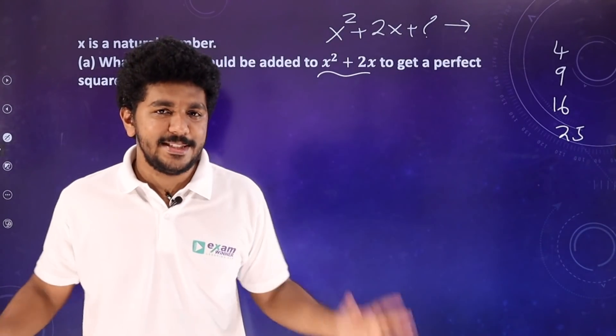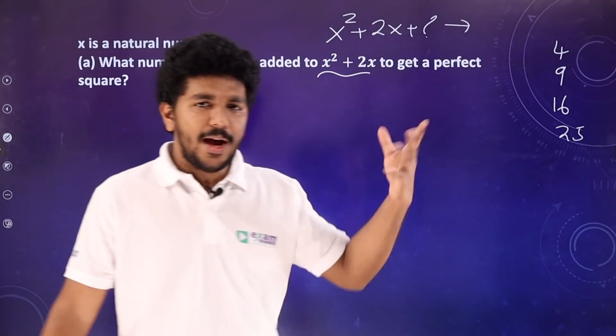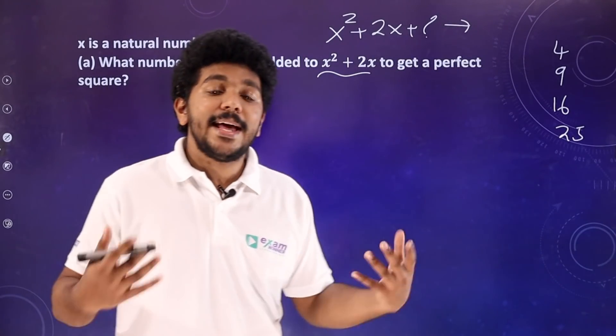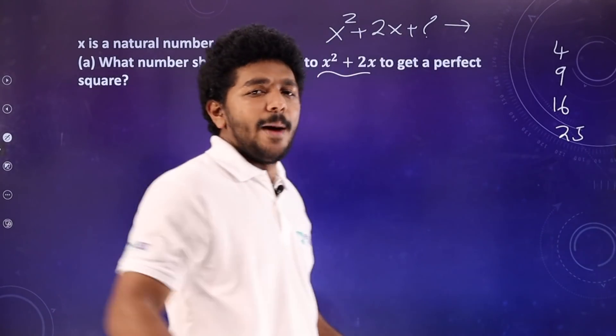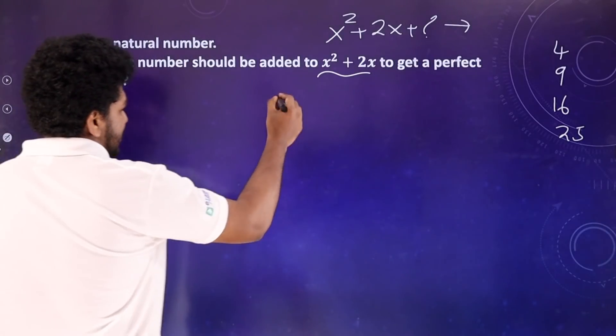I am going to do a complete the square method. Basically, in the complete the square method — or completion of the square method — what is the requirement? The method is to add a new number so that the result is a perfect square.